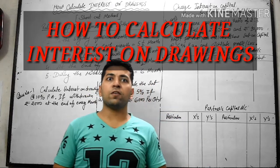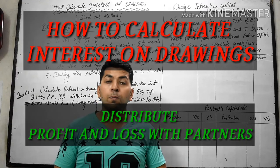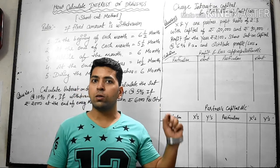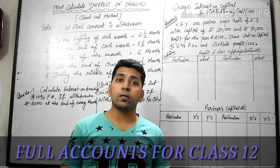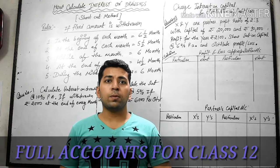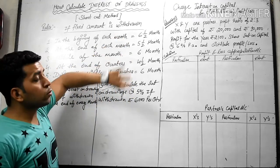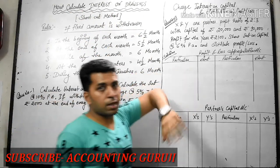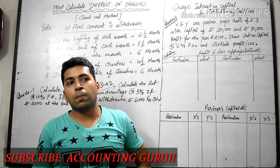Welcome back guys to another video on Accounting Guru Ji. I am going to start partnerships account — a Class 12 accounting topic. I have started from Tulsan Rider's book from CBS. So guys, if you are in 12th class you must watch the video till the last and subscribe if you are a new viewer of my channel. Today we have two topics: first, how to calculate interest on drawings, and second, how to charge interest on capital and distribution of profit.